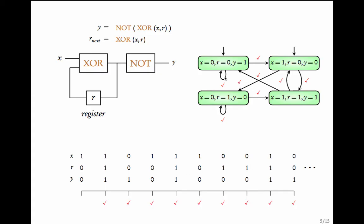For example, the execution starting at (1,0,0) goes to (1,1,1), then (0,0,1), then (1,0,0), then (1,1,1), and so on — corresponding to a path through the transition system. This transition system gives a compact representation of the behavior of the circuit.